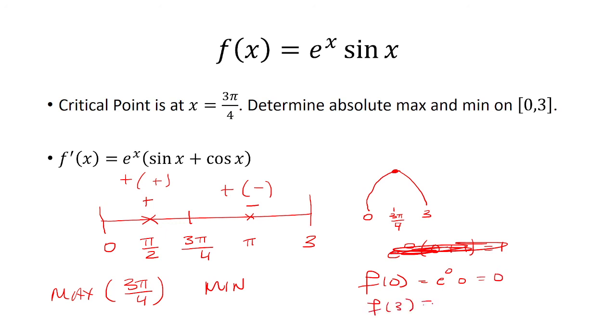And then you plug in f of 3, you get e cubed times sine of 3. Well, let's see. Sine of 3 is going to be, if we look at the unit circle, this is pi, which is about 3.14. So it's just somewhere over here. e cubed is positive. Sine of 3 is also positive. So positive times a positive, this is greater than 0.